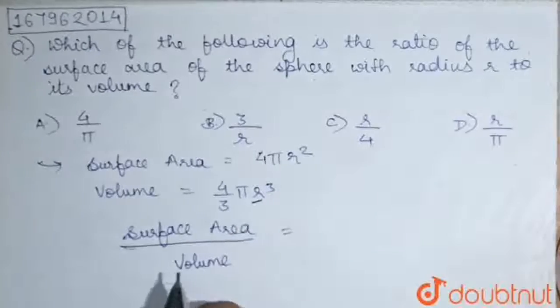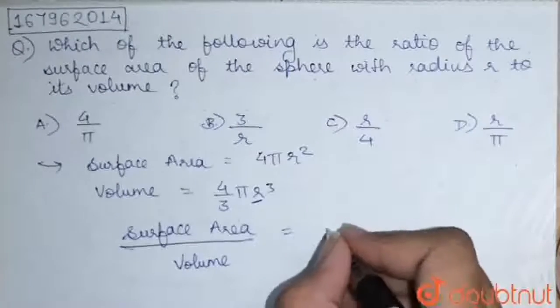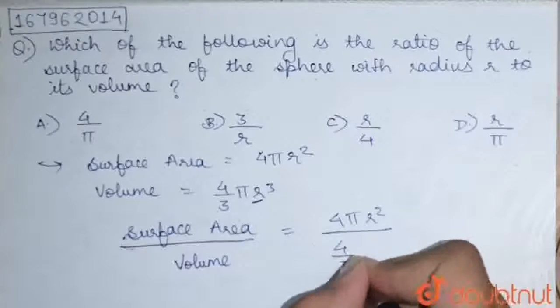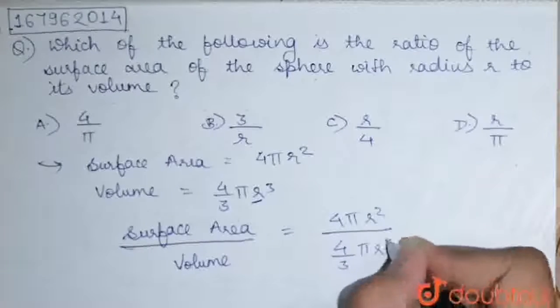Here, r is radius of the sphere. That is given in our question. So, 4 pi r square upon 4 by 3 pi r cube.